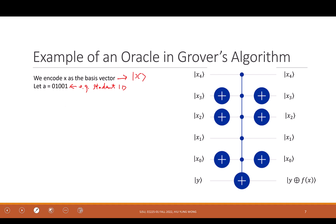In a classical computer I compute f(A) by checking each X: if X equals A, return 1. If f(X) not equal to A, return 0. The goal is to come up with a quantum oracle so that if the basis state is A, the output is 1; if the basis state is not A, the output is 0.